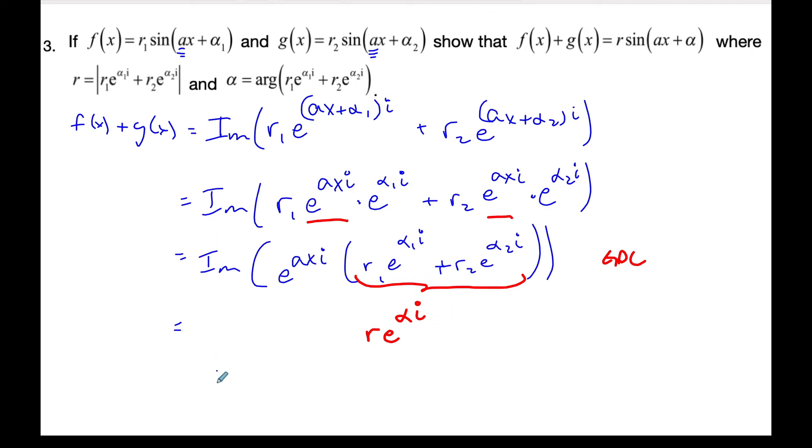The R is going to equal to whatever the magnitude is of this value here. So therefore R will be the magnitude of R1 E to the alpha 1 I plus R2 E to the alpha 2 I. Whatever the magnitude of that number is or the R value is, is what R is. Similarly, the angle alpha will be the angle or what we call the argument of this same number here. Whatever we get will be alpha.